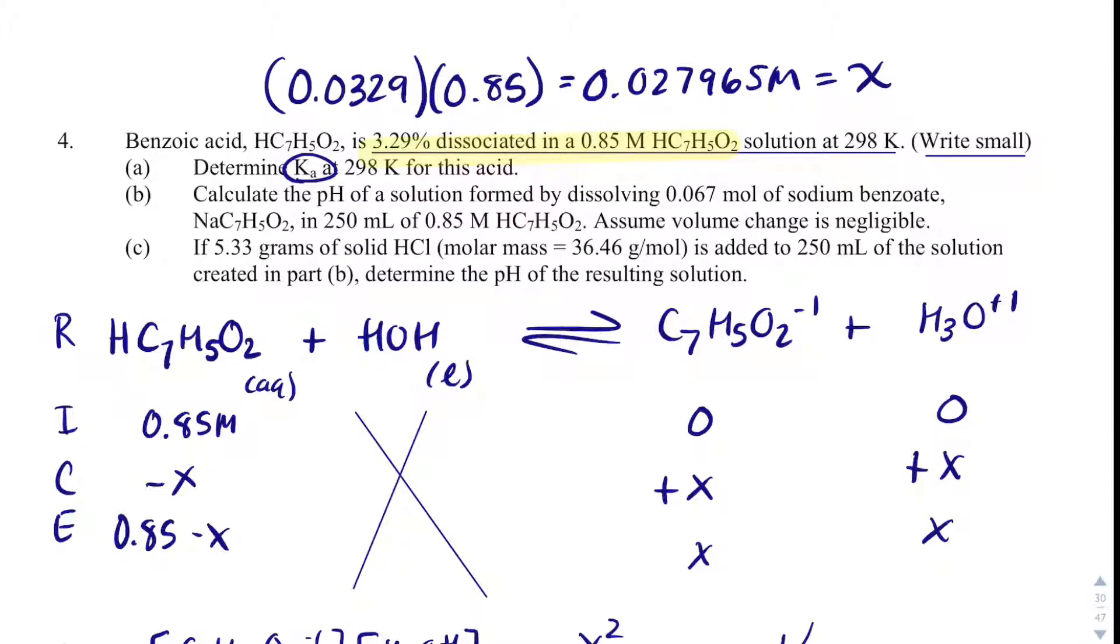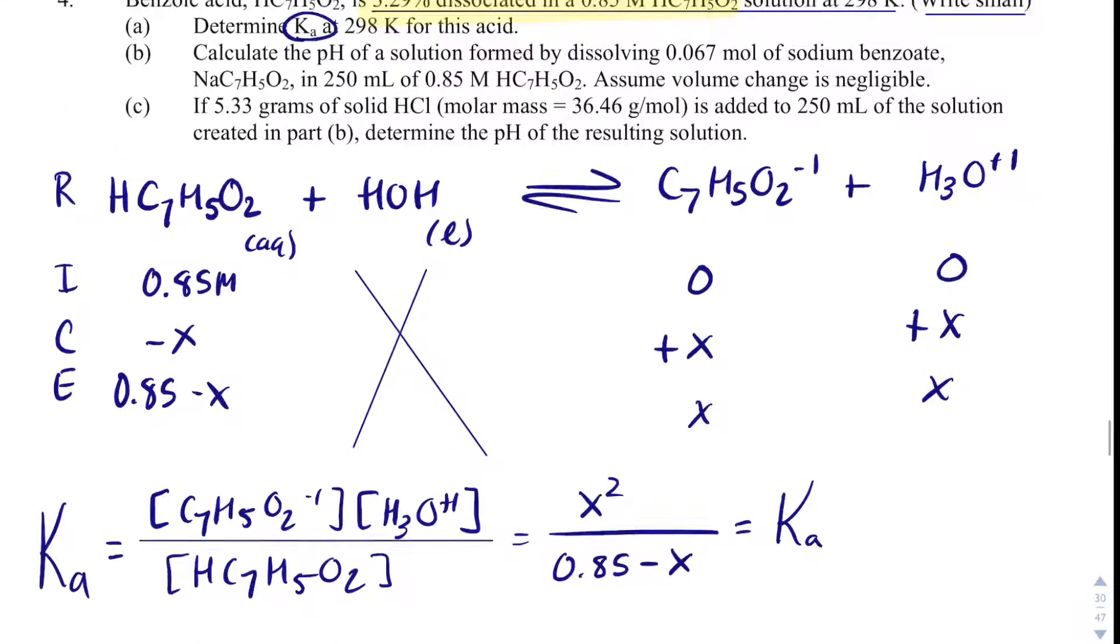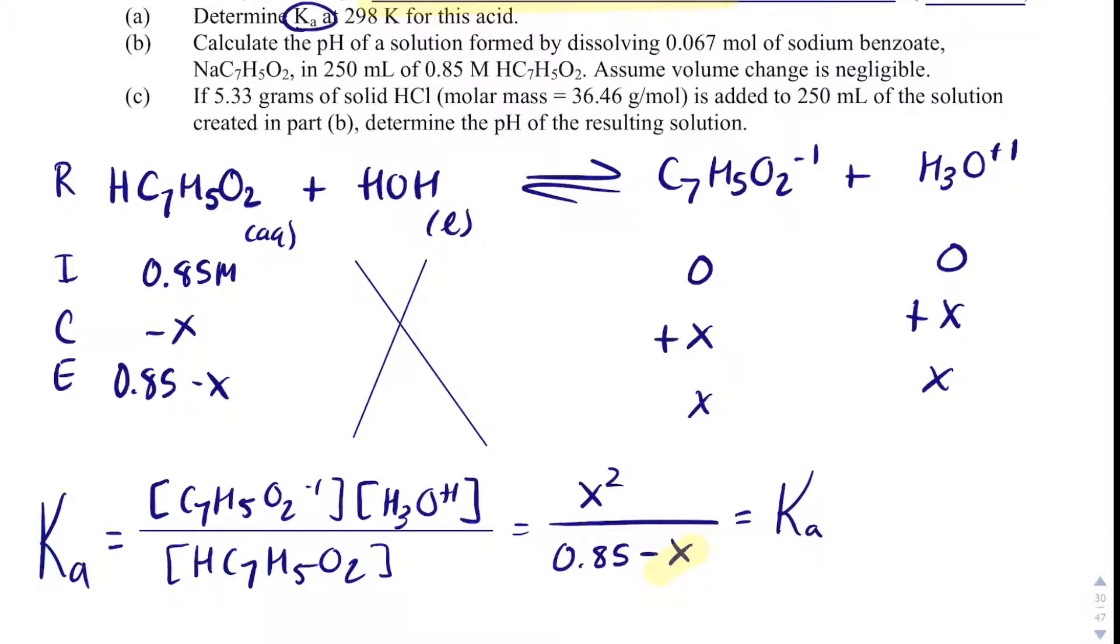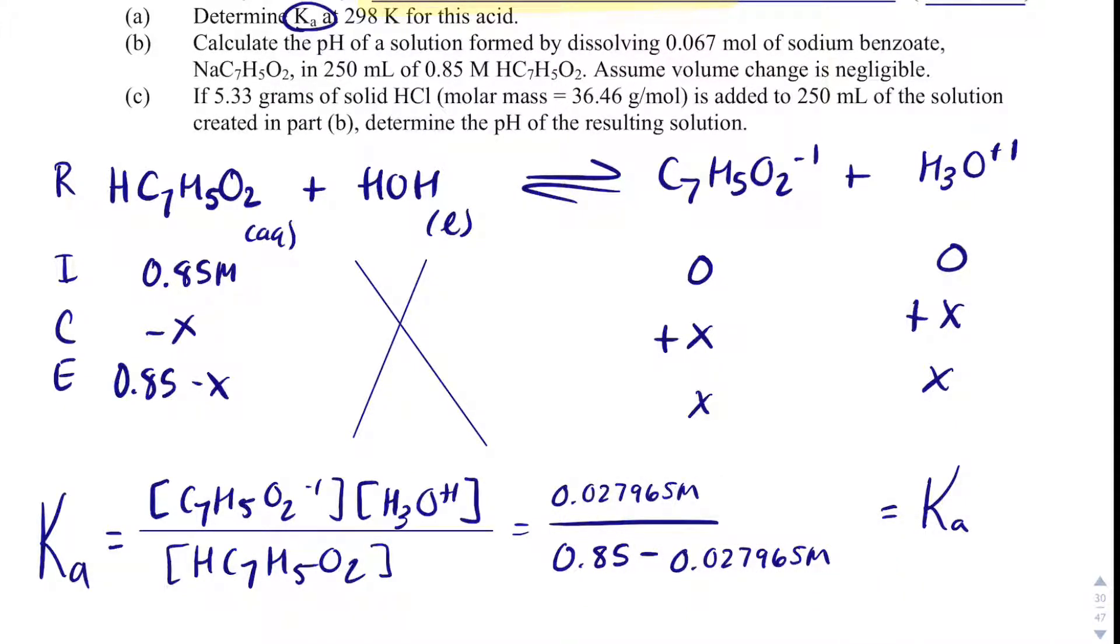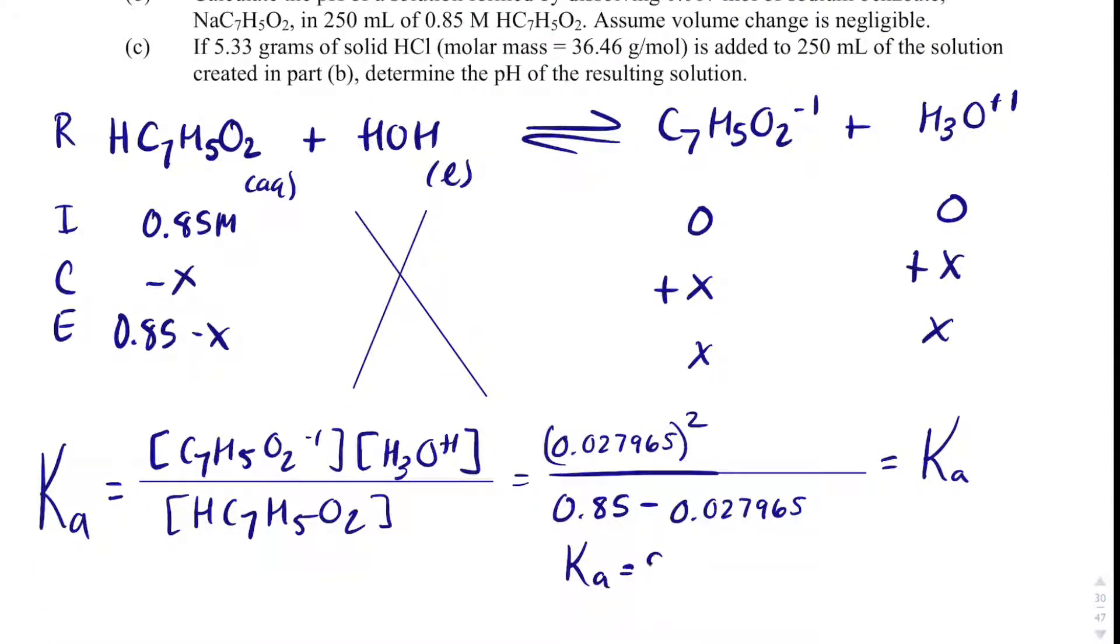I'm going to take this number, and I'm going to plug it in for X. Some people will end up doing a 5% rule here with this X, but I would argue we know what X is, so there's no need to do the 5% rule there. So what I'm going to do is I'm going to get rid of these X's, and I'm going to plug in what I know for X now. And with that, I've got to make sure I square my numerator. And when I plug in all of this, I get Ka is 9.51 times 10 to the minus 4. So, that is my answer for A.